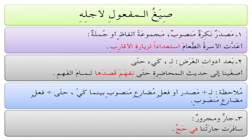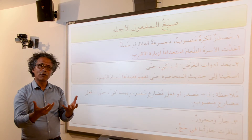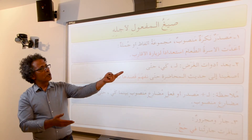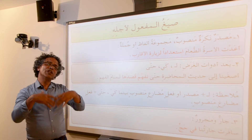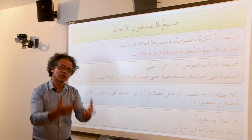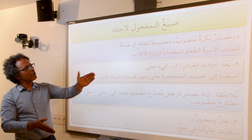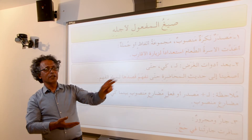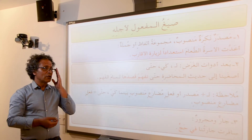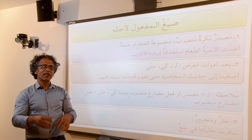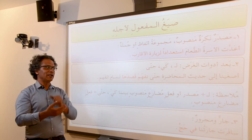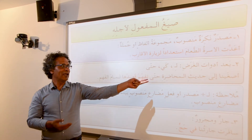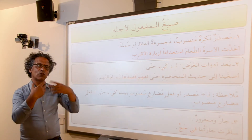بعد أدوات الغرض — after you use expressions that mean 'in order to' in Arabic, you also use المفعول لأجله. The particles لِ، كي، حتى all express the idea of 'in order to' or 'for the purpose of.' Example: أصغينا إلى حديث المحاضِرة حتى نفهم قصدها تمام الفهم — we listened carefully to the lecture of the presenter so that we understand her meaning well. So حتى means 'in order to,' and what follows it is المفعول لأجله.